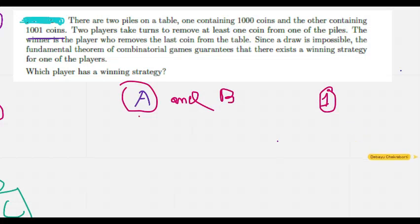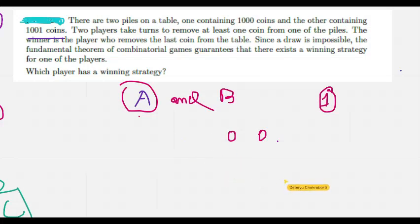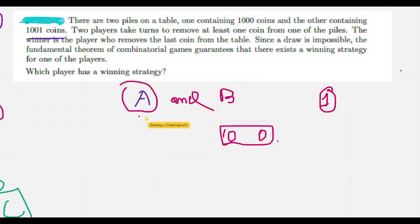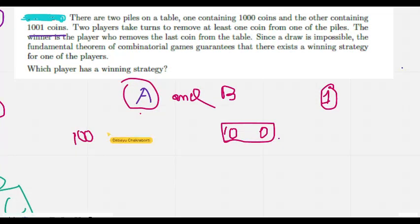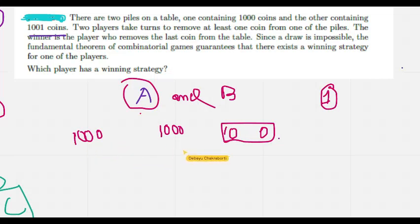What A can do is take one coin from the pile of 1001 coins. We notice that one player will lose if there are 0 coins in both piles. So if we want A to win, he has to create that situation. A takes the coin from the second pile, so B now has 1000 coins in both piles and must pull some of them.